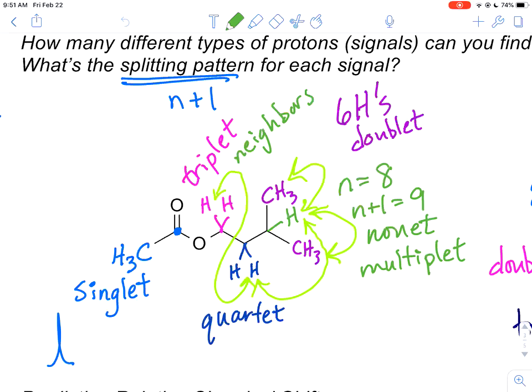We looked at the structure here of isoamyl acetate or banana oil. We identified that there were five signals total, that we had a bunch of different types of splitting patterns. We found that the CH3 group was a singlet. We found that this pink CH2 group was a triplet,